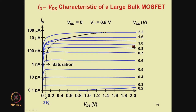One can distinguish the subthreshold region from the superthreshold region in terms of two features. In the subthreshold region, the current seems to be increasing exponentially with VGS because ID is on a log axis and increments in ID on the log axis seem uniform for uniform increments in VGS. In the superthreshold region, however, the current does not increase uniformly with uniform increments in VGS. The second feature is that in the subthreshold region, the current seems to saturate at approximately three times VT for all values of VGS, so the saturation point seems to remain constant independent of VGS, whereas in the superthreshold region the saturation voltage increases as VGS increases.